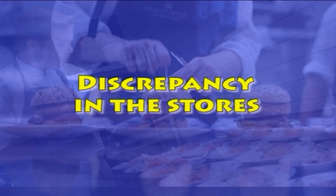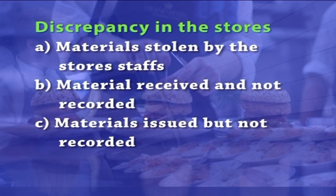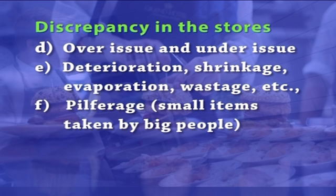Let us now move on to the fourth objective: discrepancy in the stores. It means the difference between booked stock and actual stock. This can happen for the following reasons: materials stolen by store staff, material received and not recorded, materials issued but not recorded, overissue and underissue, deterioration, shrinkage, evaporation, and wastage.